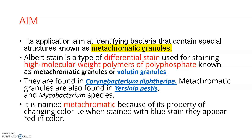Metachromatic granules are found in bacteria such as Corynebacterium diphtheriae, Yersinia pestis, and Mycobacterium species. The name 'metachromatic' comes from the property of these polyphosphate granules of changing color — when stained with a blue color dye, they appear red in color. This property of changing color is called metachromatic.